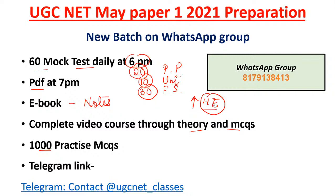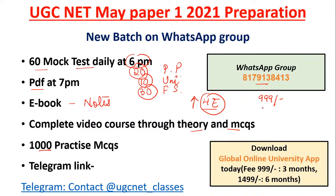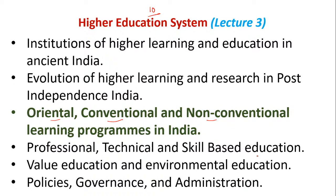If you are interested, you can join the WhatsApp group. The fees is just 999 rupees. You can post doubts in the group and they will be answered as soon as possible. There is also a Global Online University app where you can subscribe for three or six months depending on your exam timeline. Tomorrow's session will cover professional, technical, and skill-based education, followed by value education, environmental education, policies, governance, and administration.